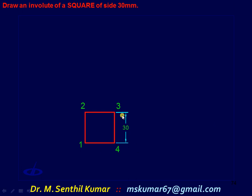Now the thread is wound this way. I start unwinding from point 4. The moment I start unwinding the thread from point 4, the contact point of the string onto the square will be point 1. It will be a perfect arc — not a free curve, it is an arc, so you have to use a compass. With 1 as center and 1-4 as radius, that is 30 mm, draw an arc.